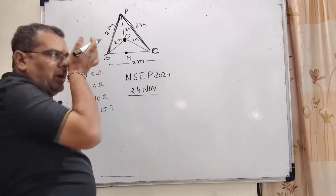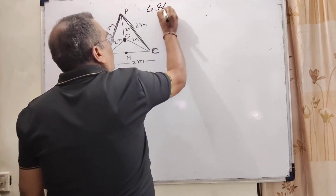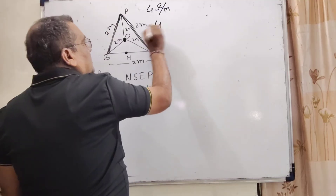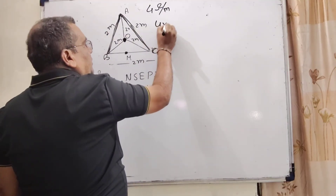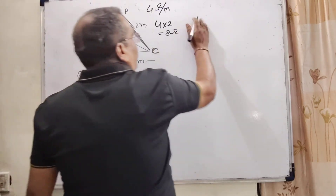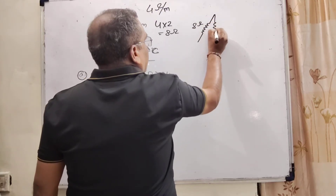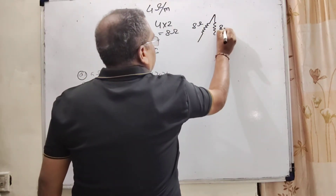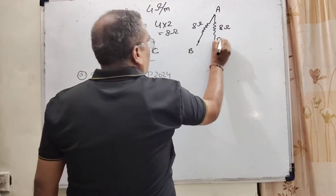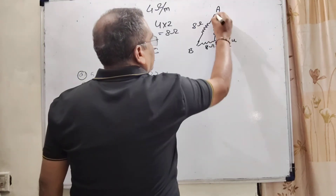According to this arrangement, each side has a length of 2 meters and resistance is 4 ohm per meter, so resistance of each side is 4 × 2 = 8 ohm. We redraw this diagram showing the resistances: OA is 8 ohm, OB is 8 ohm, OC is 8 ohm, AB is 8 ohm, and AC is 8 ohm.